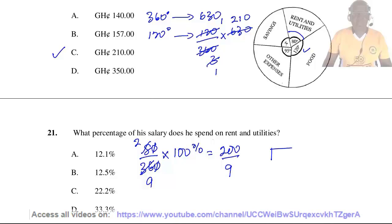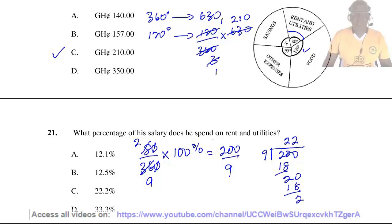Using the long division method for 200 divided by 9, we get a repeating result of 22.2 recurring. The answer is C.